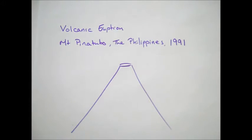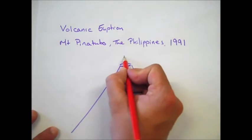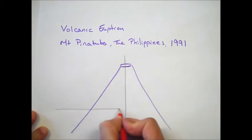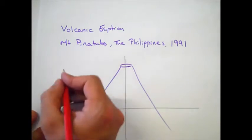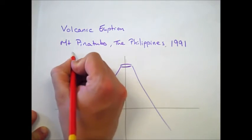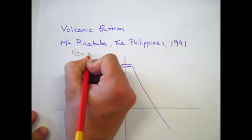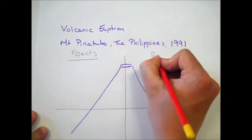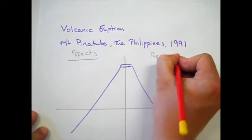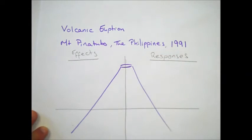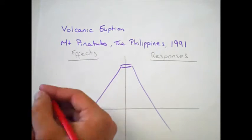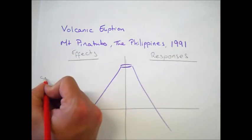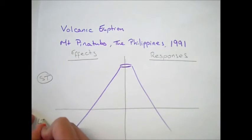With all of our restless earth case studies, particularly our natural hazards, we really want to think about the effects and the responses and how we can categorize those. If we split our drawing of a volcano basically four ways, what we've got on this side is our effects and here we've got our responses. We can categorize our effects and our responses into short-term and into long-term.